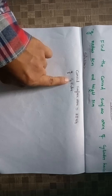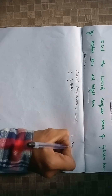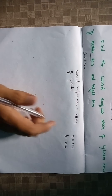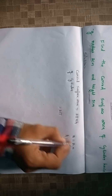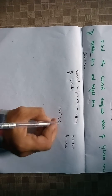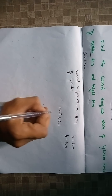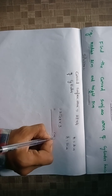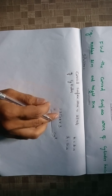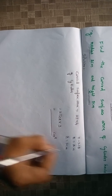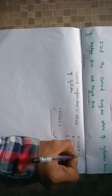Curved surface area of cylinder equals 2πrh. Radius is 2 centimeters and height is 3 centimeters. Substituting: 2π into 2 into 3. Remember, the value of π is 3.14 or 22/7. The value we get is 37.68 centimeters squared.